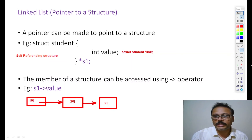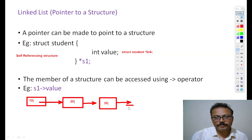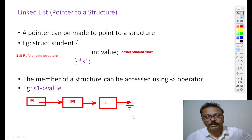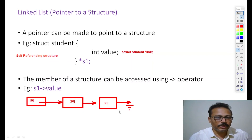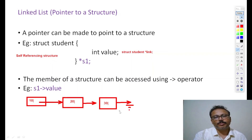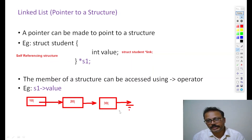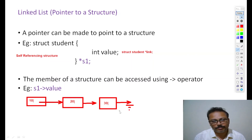Usually the last node's link field points to null, which is shown diagrammatically as a grounded symbol. This forms a linked list — a list of elements which are linked together. To complete this topic, we need to combine structures and pointers with dynamic memory allocation, and that program will be covered in a separate video as it takes more time.